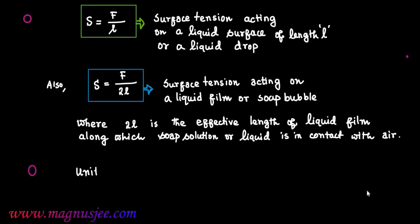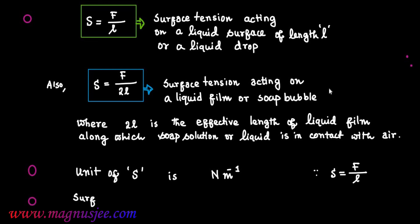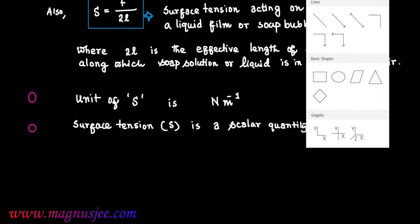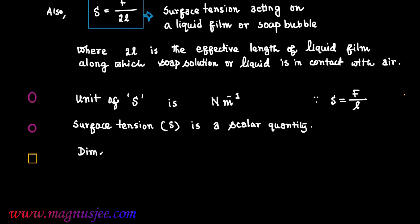The unit of surface tension S is newton per meter, because S = F/L, which is force divided by length. Surface tension is a scalar quantity — it has no definite direction. The dimension of surface tension is [MT⁻²].